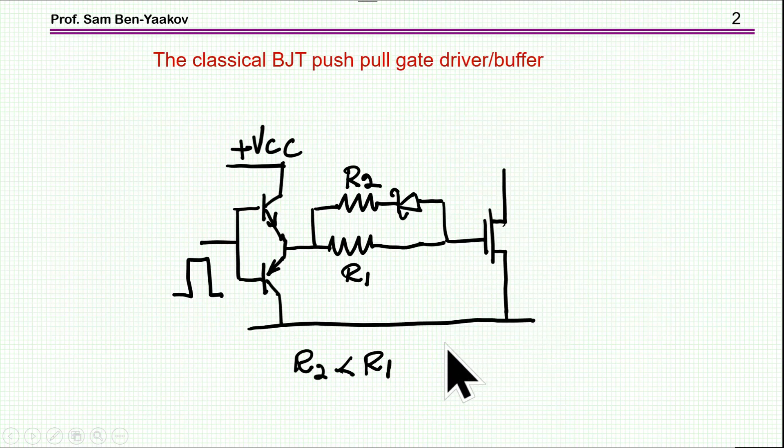Now, the classical way of boosting a drive to a gate of a MOSFET or IGBT is using a push-pull BJT transistors, NPN and PNP, driven by, say, through a driver.